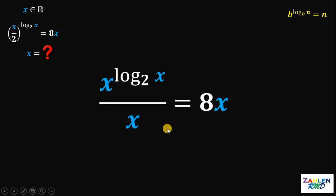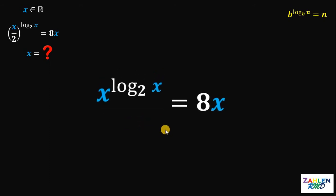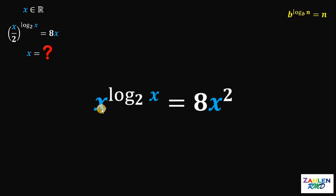Now let's multiply both sides by x. This gives us x raised to logarithm of x to the base of 2, equals 8x squared.